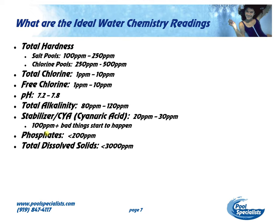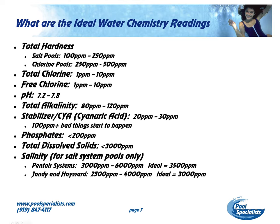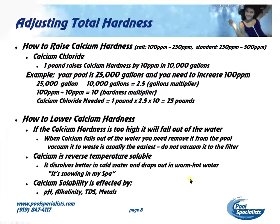Salinity — and this is for salt pools only. If you have a Pentair salt system, your range is going to be between 3,000 and 6,000 parts per million; your ideal salt level is 3,500 parts per million. If you have a Jandy or Hayward system, you're going to be somewhere between 2,500 and 4,000 parts per million, and your ideal is 3,000 parts per million.